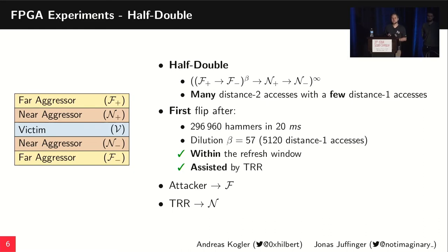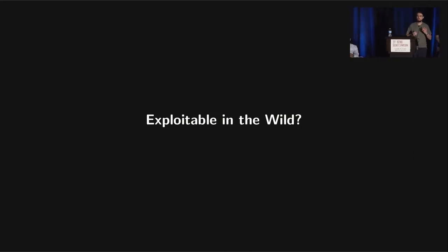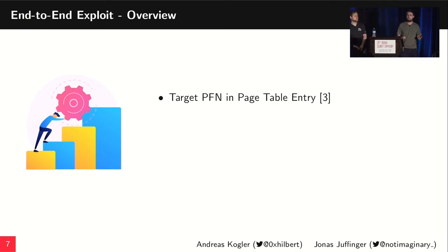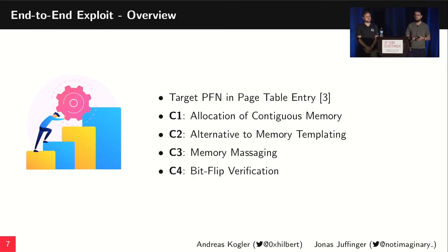So that was the technical explanation. Can we exploit HalfDouble in the wild? We built an end-to-end exploit. It uses the same technique already used in many Rowhammer exploits, discovered in 2015: targeting the page frame number of a page table entry, flipping a bit so it points to another page table, giving full read and write access to the whole memory. In the paper, we defined four challenges to solve on modern devices: allocation of contiguous memory, an alternative to memory templating due to ECC, memory massaging, and a modern bit flip verification to make the exploit reliable.